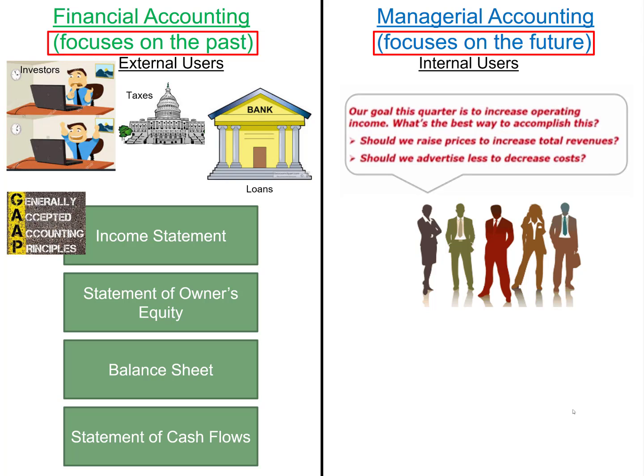Managers need to make long-term plans and goals, like 5 to 10 years in the future, as well as intermediate goals. A common goal is to increase operating income. Should the company raise prices to increase total revenue, or should they advertise less to decrease costs? Managerial accounting helps them make these decisions.